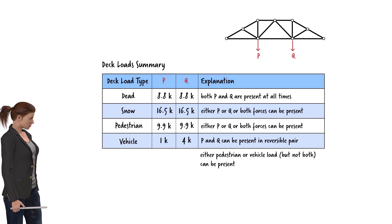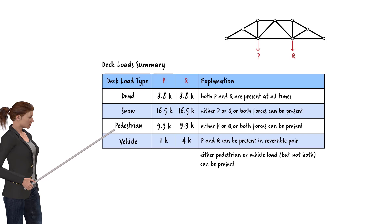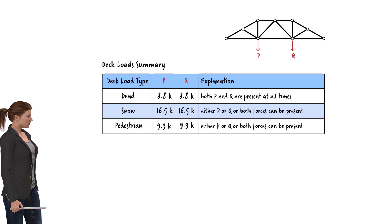Furthermore, according to the AASHTO specifications, pedestrian and vehicular loads are not present at the same time. If the bridge is loaded with pedestrians, then no truck load is present, and vice versa. In this case, since the pedestrian load is larger than the truck load, we can omit the latter from consideration. Therefore, the pedestrian load, not the vehicular load, governs the design of tension members.